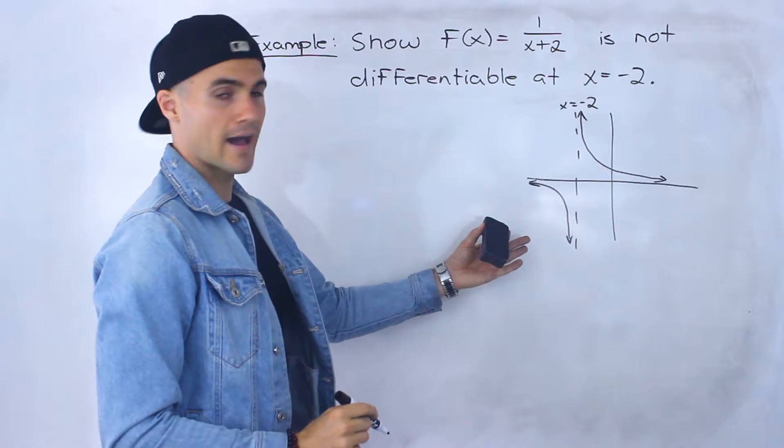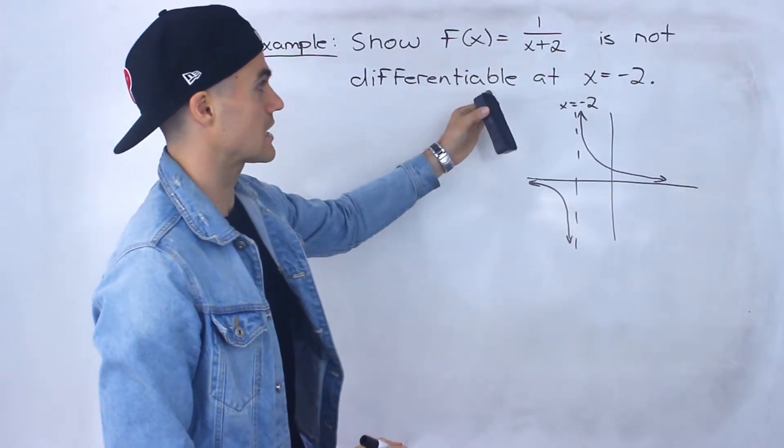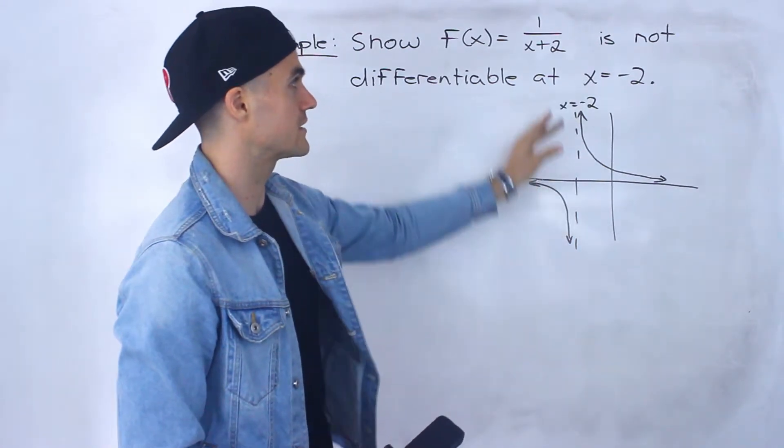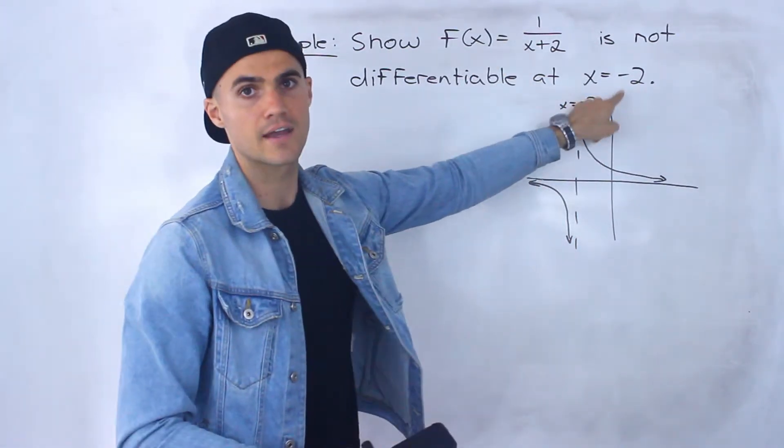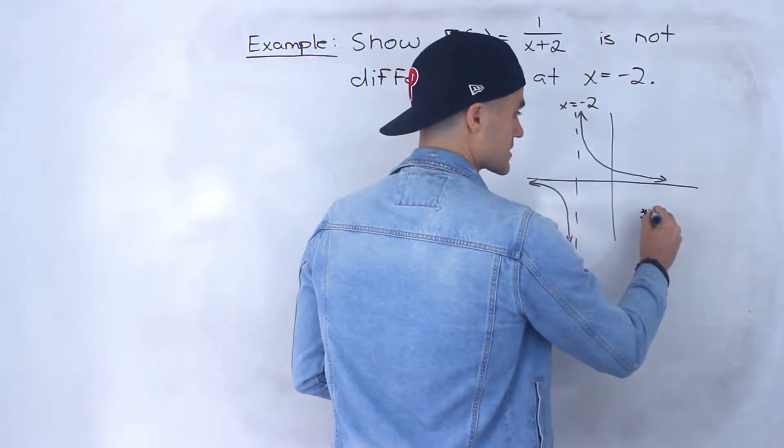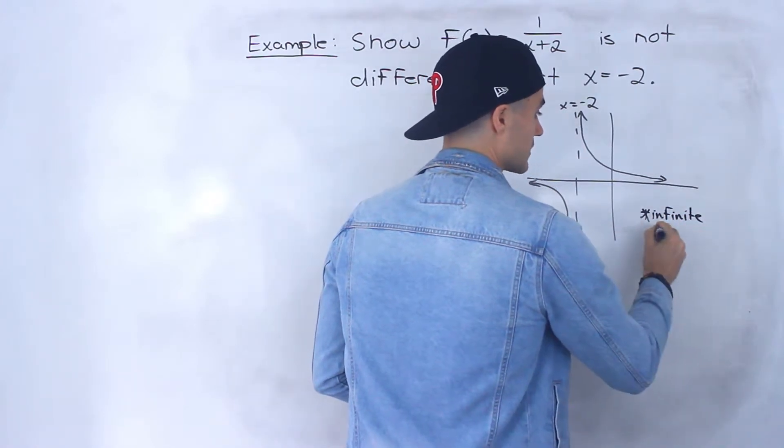And so just from looking at the graph, it's obvious to tell that this function isn't going to be differentiable at that x value of negative 2 because this function doesn't exist at that x value. There's a vertical asymptote there. And so the reason for this is because of an infinite discontinuity.